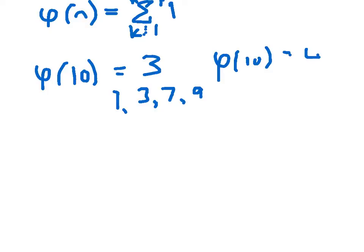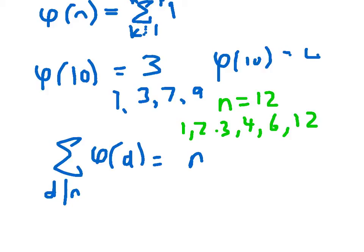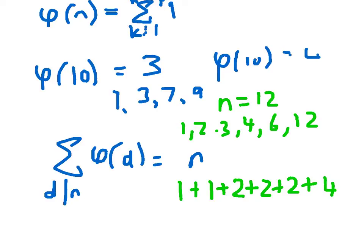A couple of useful things about phi that I'm going to come across again and again. The sum of phi of d, as d divides n, equals n. To verify this with n equals 12: the divisors of 12 are 1, 2, 3, 4, 6, and 12. The phi values are: phi(1)=1, phi(2)=1, phi(3)=2, phi(4)=2, phi(6)=2, phi(12)=4. Hopefully that adds up to 12.